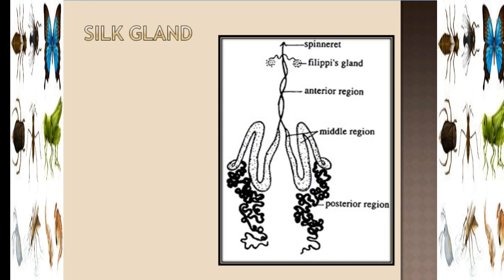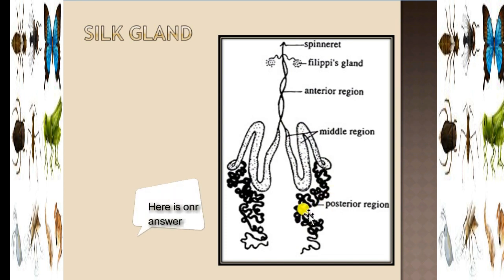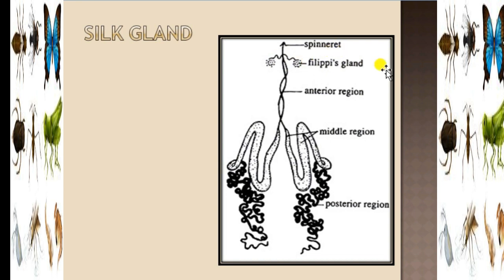Let's move on to the silk gland. The secretion of the silk gland is silk. The silk gland is located on both sides of the body and has three regions: the posterior region, the middle region, and the anterior region. The silk is in liquid form inside and becomes a thread form when it comes into contact with the outside environment.